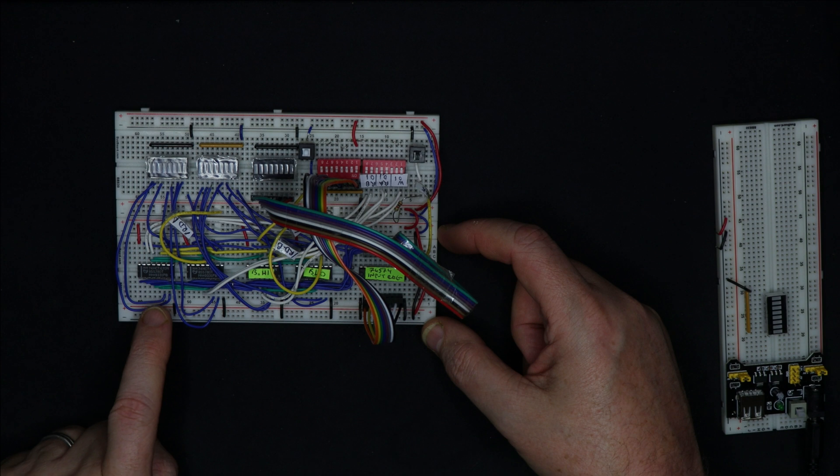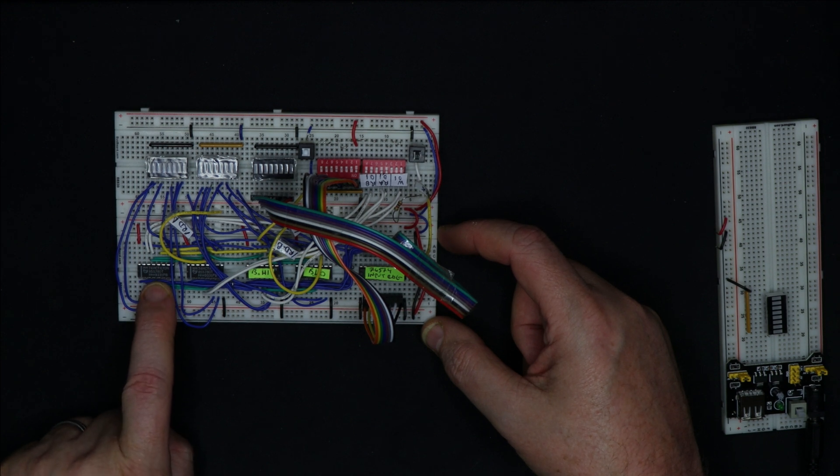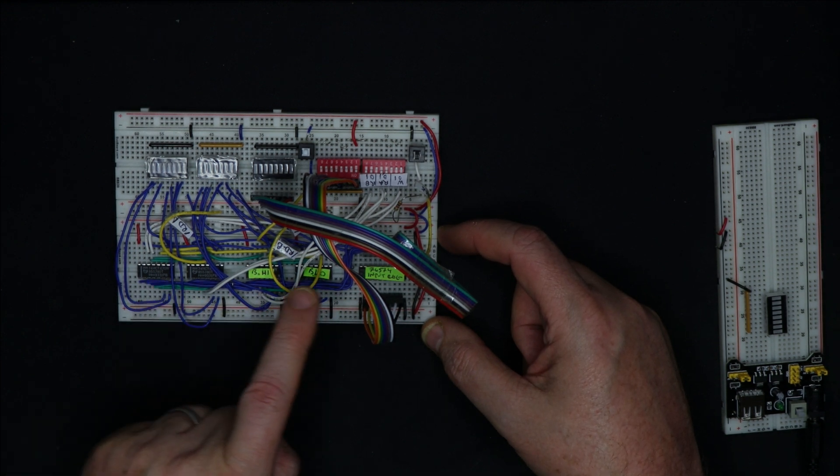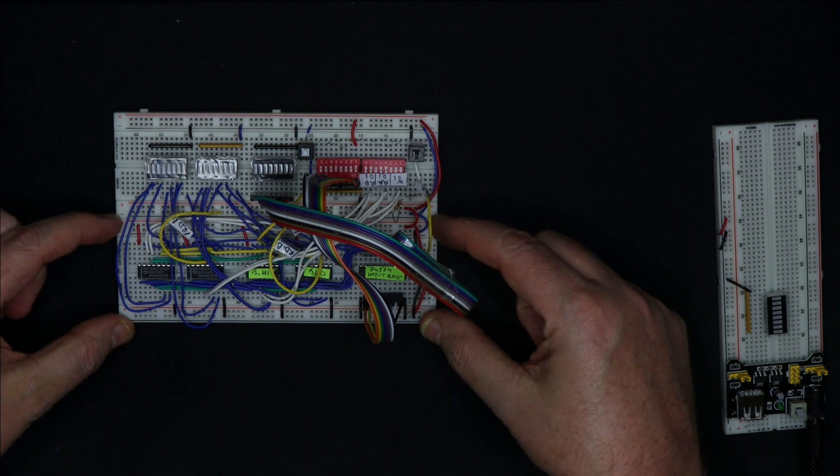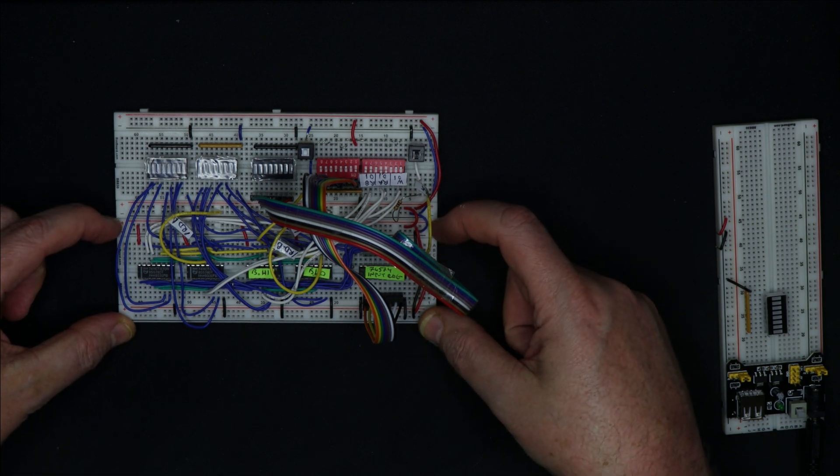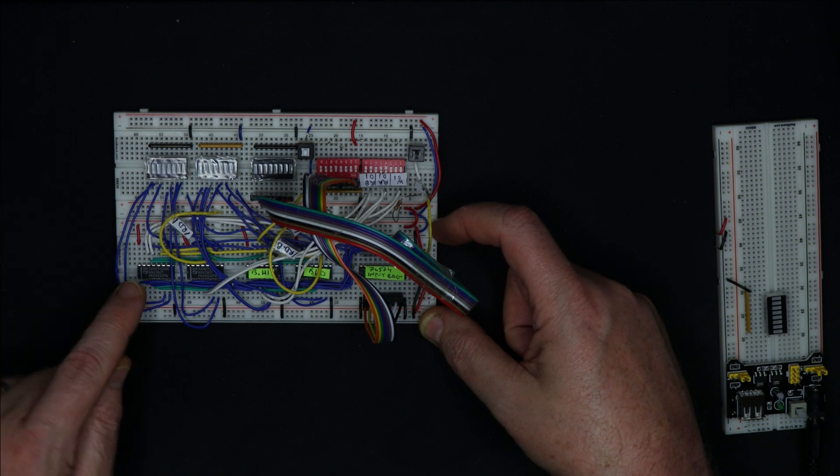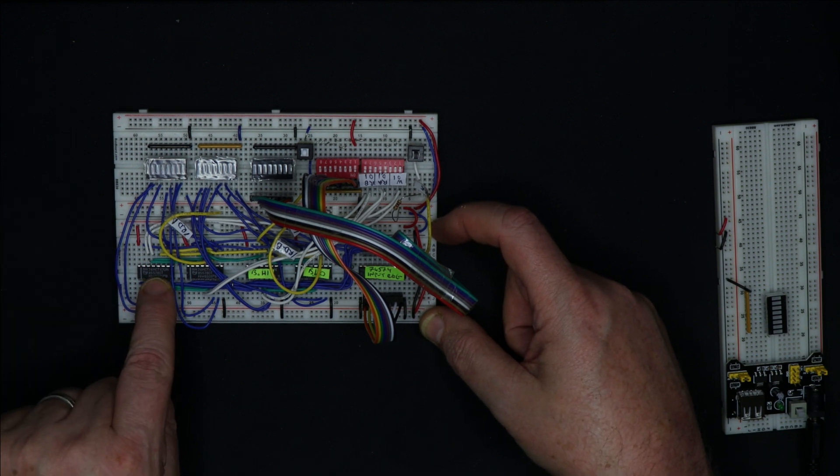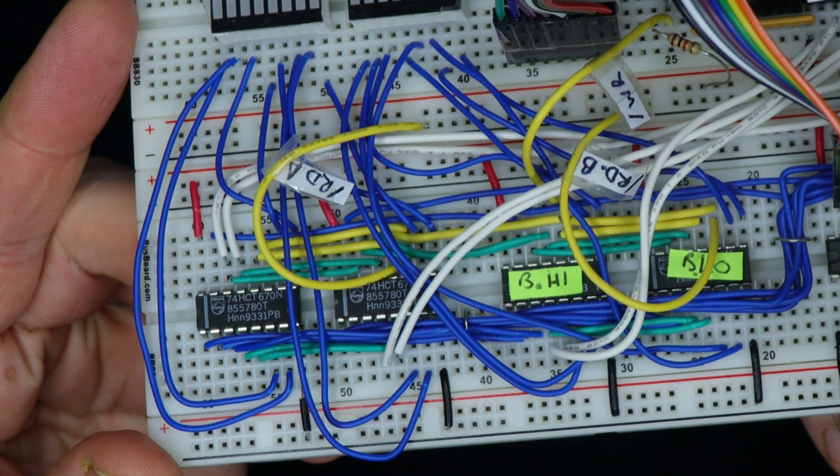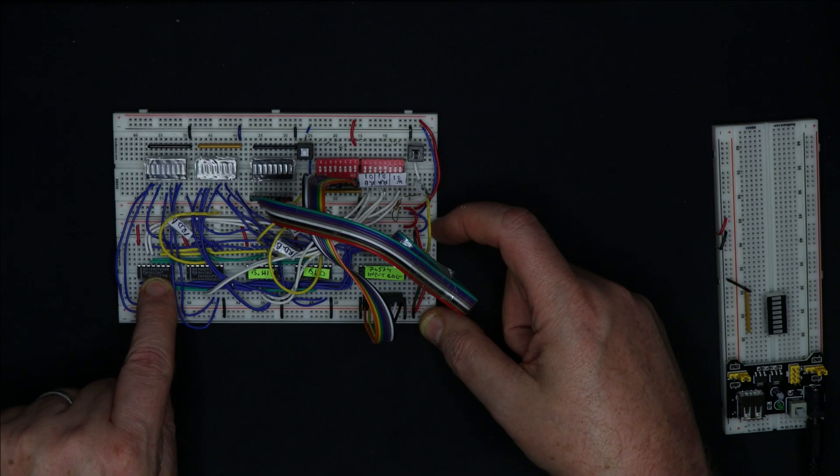But instead, I decided to do a video on the chip I've used for this register file. The register file as a whole is a triple port 4x8 byte register file. This chip here, the 74HCT670, is a 4x4 latch.